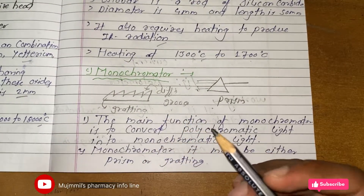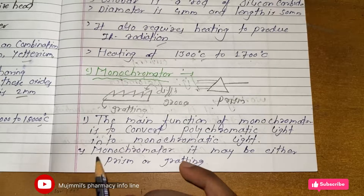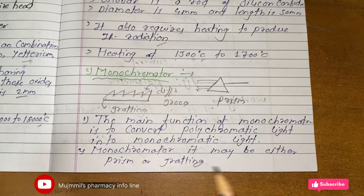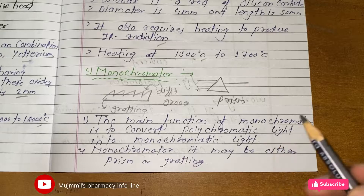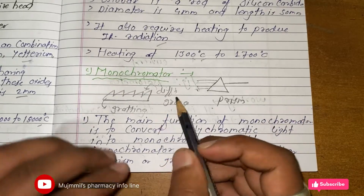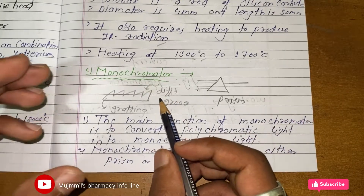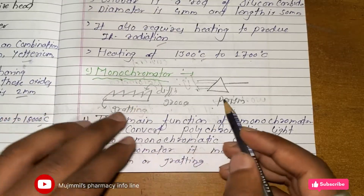Let's see the monochromator. The main function of the monochromator is to convert polychromatic light into monochromatic light. The monochromator may be either a prism or a grating. You should draw the diagram of the prism or grating for better marks.